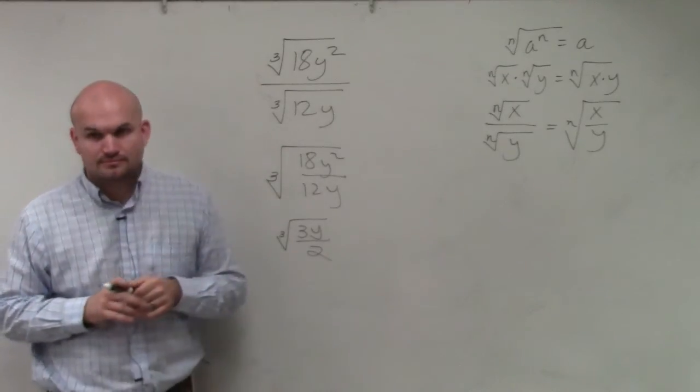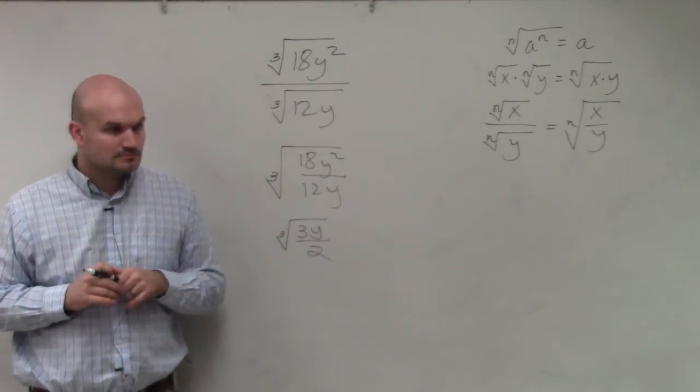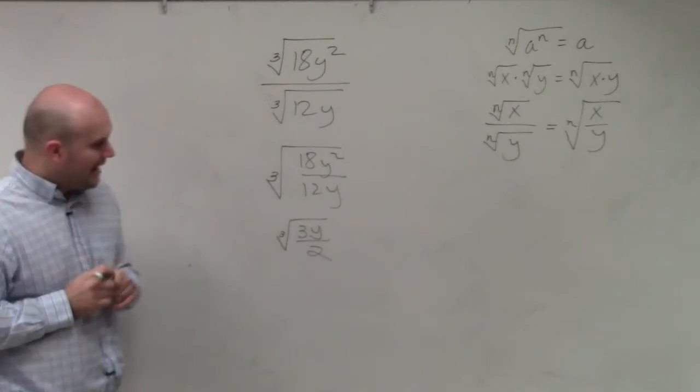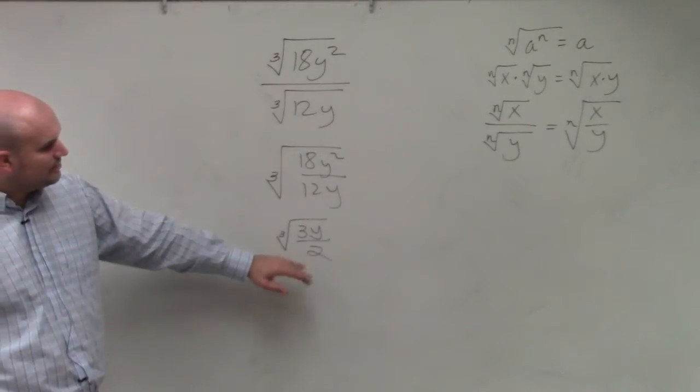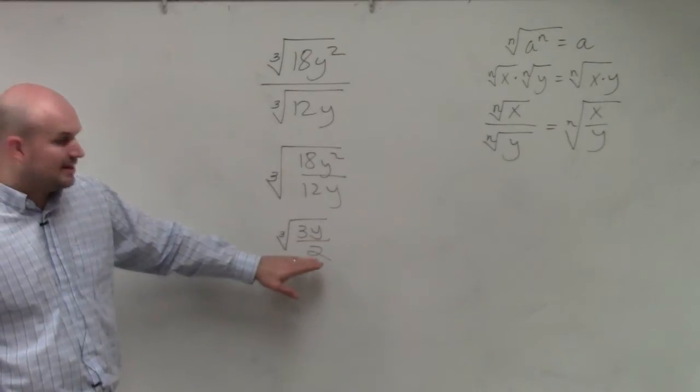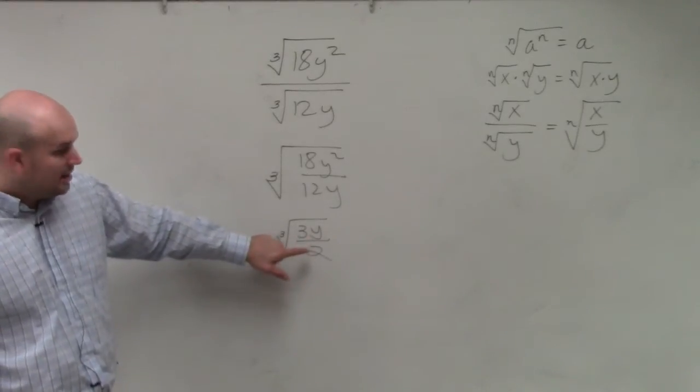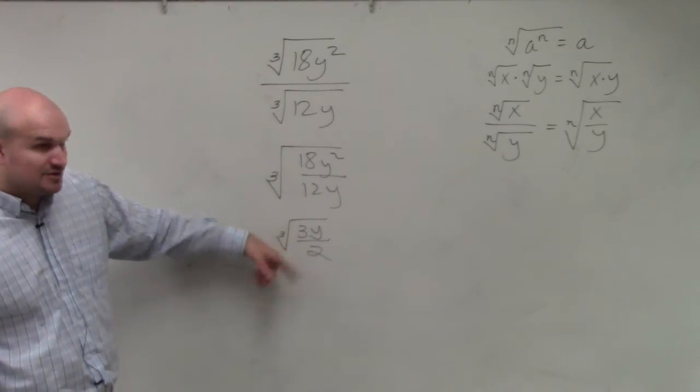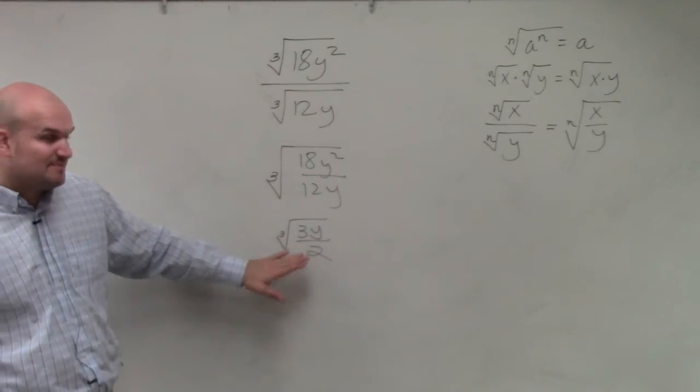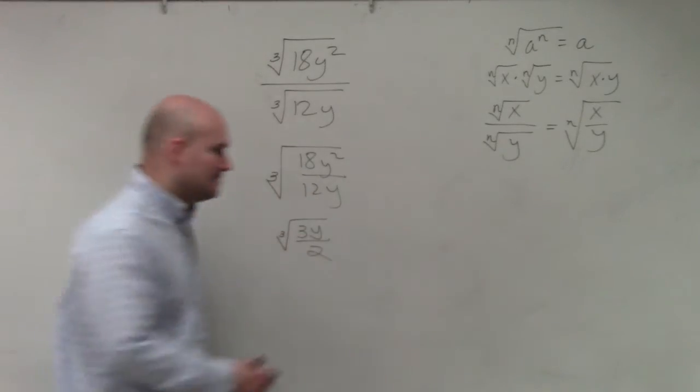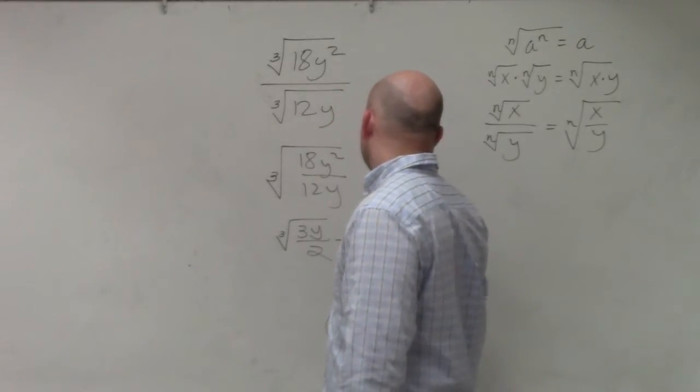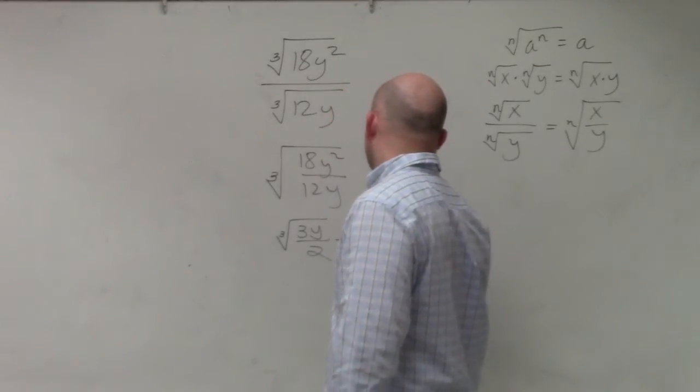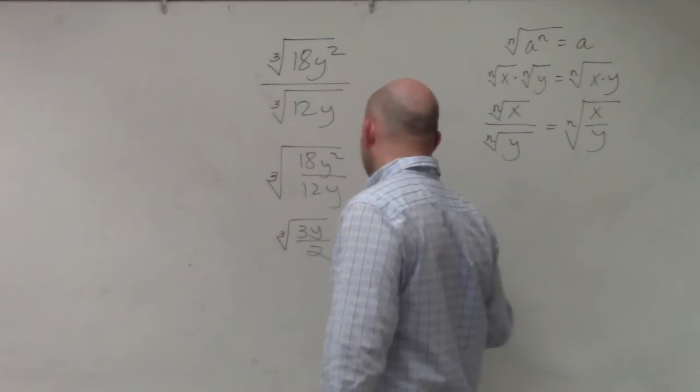Do you guys agree with me? Yes? OK. Now, technically, we do not like to have a denominator in our radical when we're dealing with the radical. So another way we can simplify this is by rationalizing the denominator. So what I'm going to do is break this apart again. The cube root of 3y over the cube root of 2.